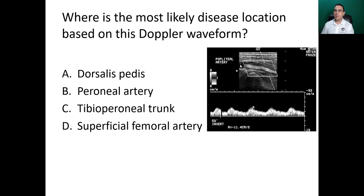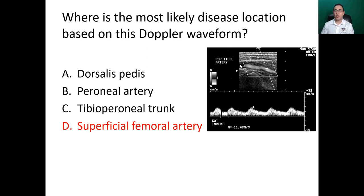What is the most likely disease location based on this Doppler waveform? If you understand hemodynamics, you can answer this. This is the tardus-parvus pattern of the waveform — you see this after a stenosis. The problem is detected at the popliteal artery, so the disease must be proximal to it. The answer is the superficial femoral artery, because the popliteal is distal to the superficial femoral.